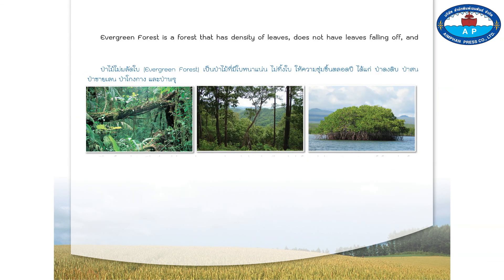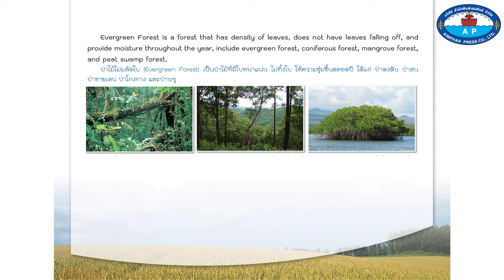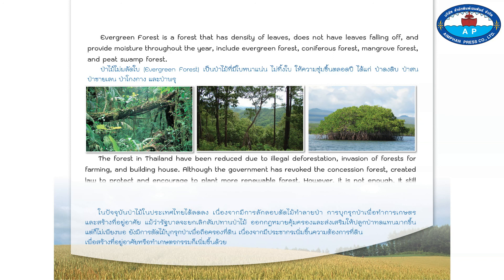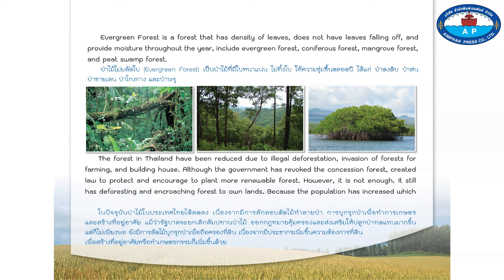Evergreen forest is a forest with dense leaves that does not shed leaves and provides moisture throughout the year, including evergreen forest, coniferous forest, mangrove forest, and peat swamp forest. The forests in Thailand have been reduced due to illegal deforestation, invasion of forests for farming, and building houses. Although the government has revoked forest concessions and created laws to protect and encourage planting of more renewable forest, it is not enough. Deforestation and encroaching on forests to own land continues because the population has increased, raising demand for land for housing and agriculture.